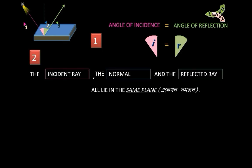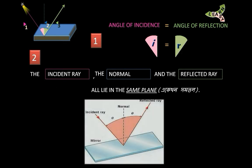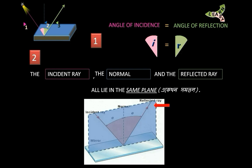What does 'same plane' mean? The incident ray, the reflected ray, and the normal to the plane of the mirror - all these lie in the same plane. They are all contained within one flat surface.